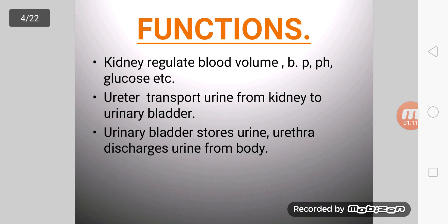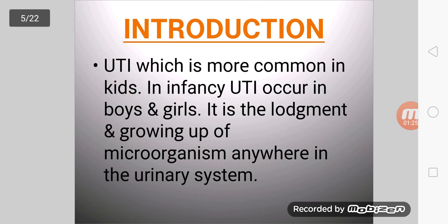The functions: the kidney regulates blood volume, blood pressure, pH, glucose, and more. The ureter transports urine from the kidney to the urinary bladder. The urinary bladder stores urine, and the urethra discharges urine from the body.